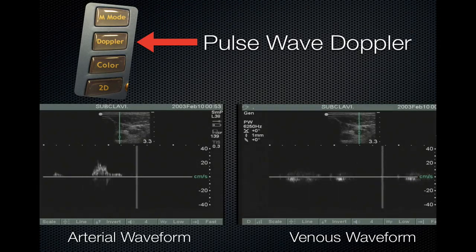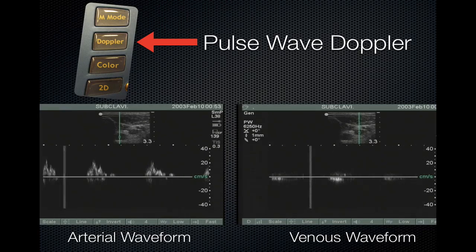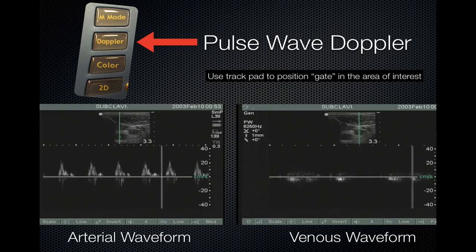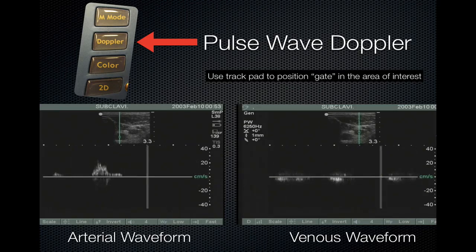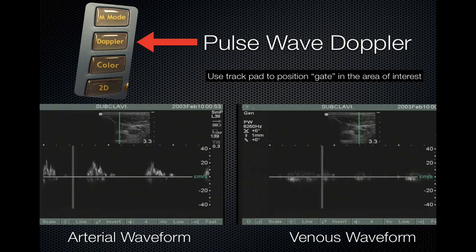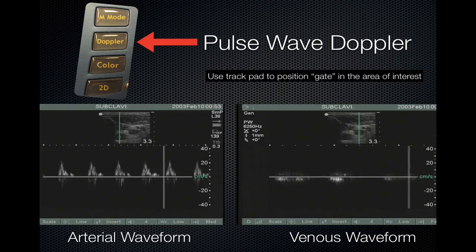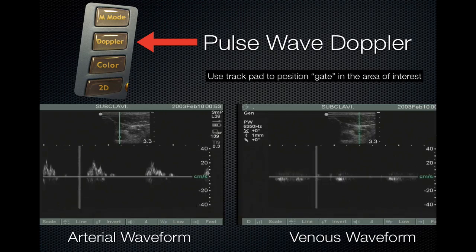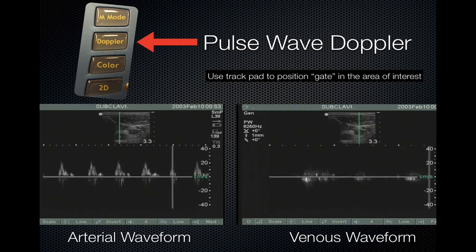Doppler is a measure of velocity. Press the Doppler button, then use your trackpad to position the gate or hatch marks in the area of interest. Press the Doppler button again — this will provide a waveform indicative of velocity. The velocity marks in centimeters per second are located to the right of the screen. Notice that arterial waveforms are pulsatile and venous waveforms are not.